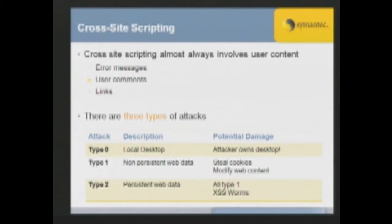As for cross-site scripting, there are three types of attacks. Type 1 - the one we've been talking about - is non-persistent web data. You send it as a URL, and the person has to be coerced to click on that URL. The potential damage includes stealing cookies or modifying web content, as we just saw in the slides.